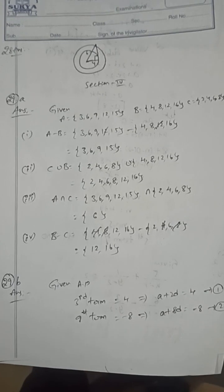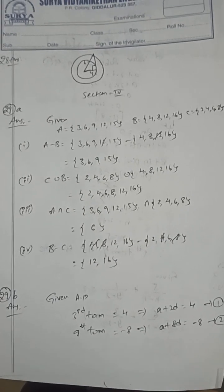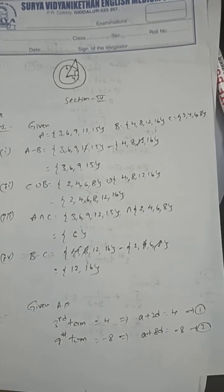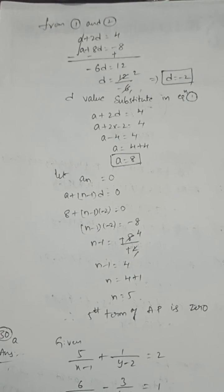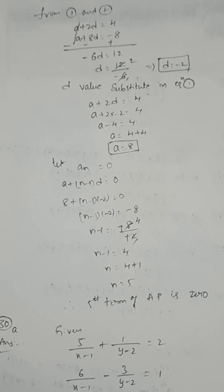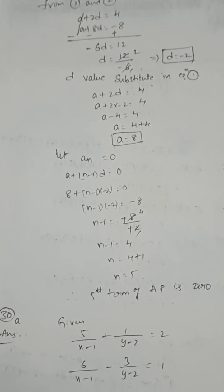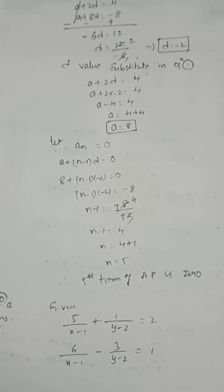Third term is 4, ninth term is -8 in the given AP. Third term: a + 2d = 4. Ninth term: a + 8d = -8. From equations 1 and 2, a value is 8, d value is -2. Which term is 0? Let's take nth term. aₙ = 0, so a + (n-1)d = 0. n value is 5. So the fifth term of AP is 0.